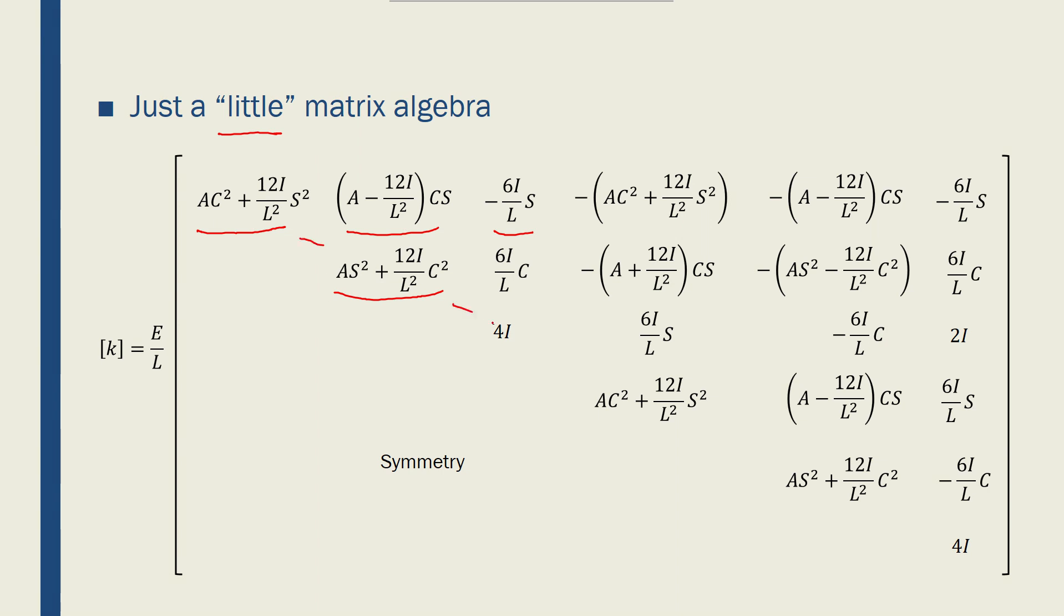One thing to notice is that the stiffness matrix, as we expect, is symmetric. So this part, this component would be placed in here, so on and so forth, so we can populate this 6 by 6 big stiffness matrix for a frame element.